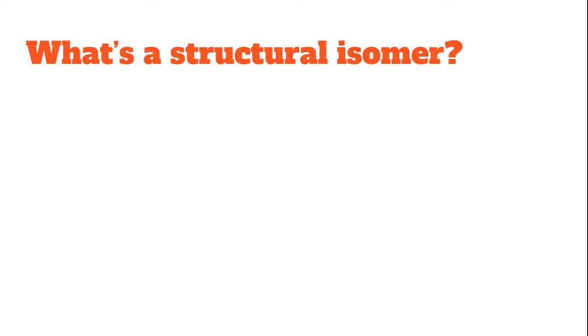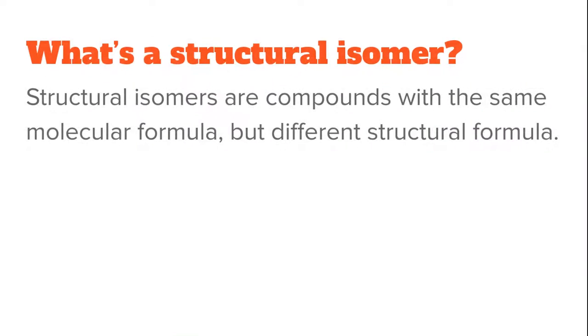So first things first, what is a structural isomer? Well, as you've been dealing with organic chemistry, a structural isomer is a compound that has the same molecular formula but a different structural formula. It's put together differently, but has the same formula, the same number of atoms as other compounds.